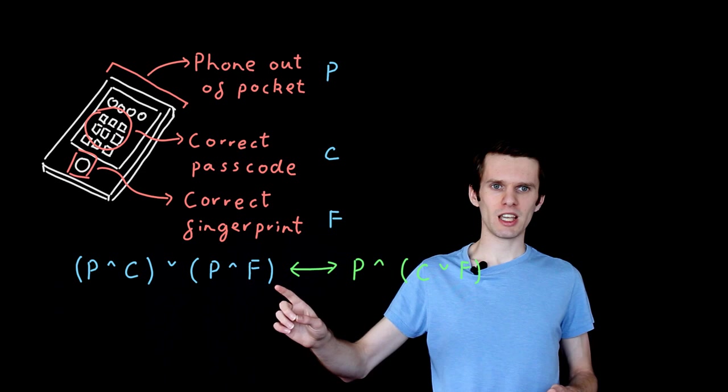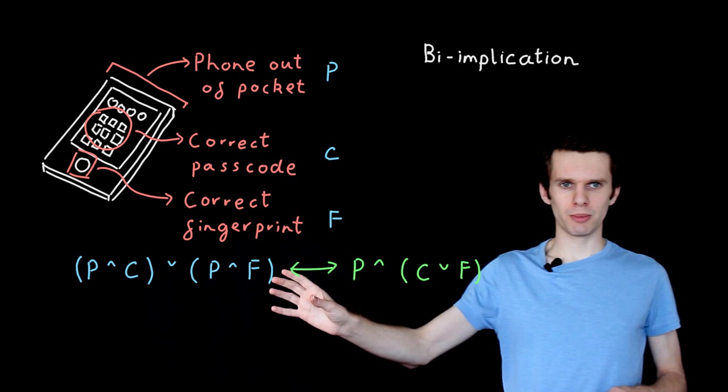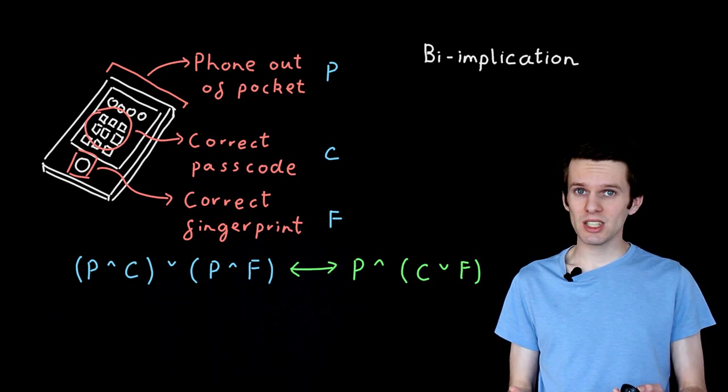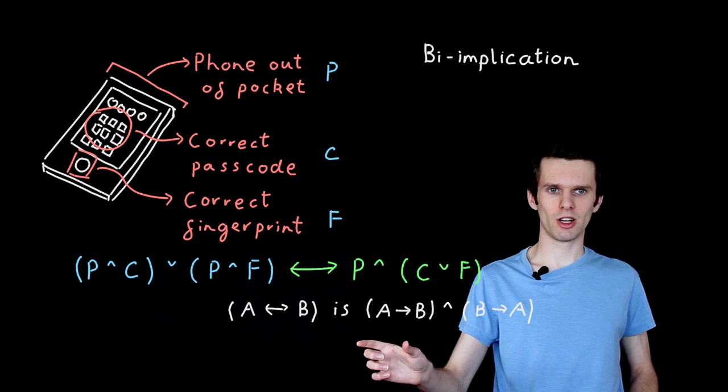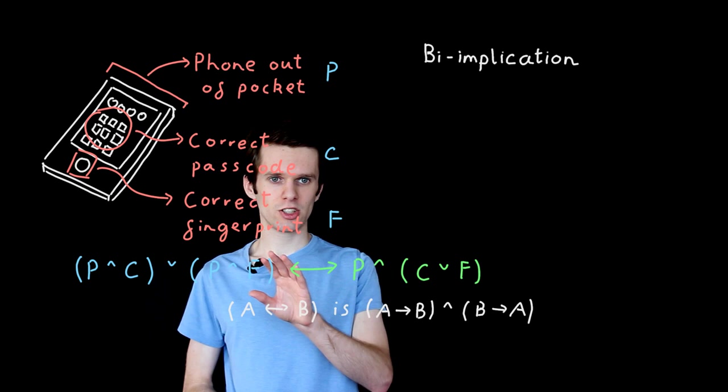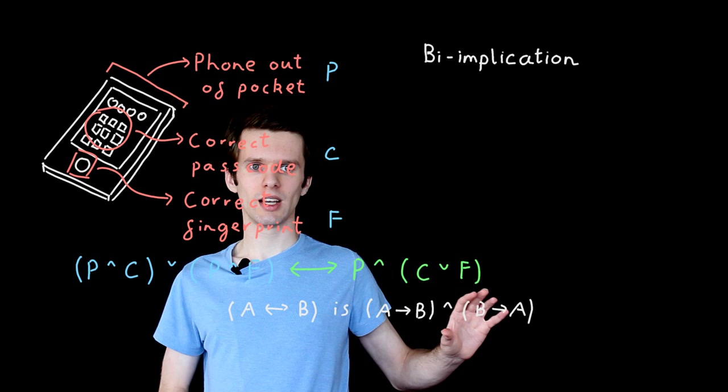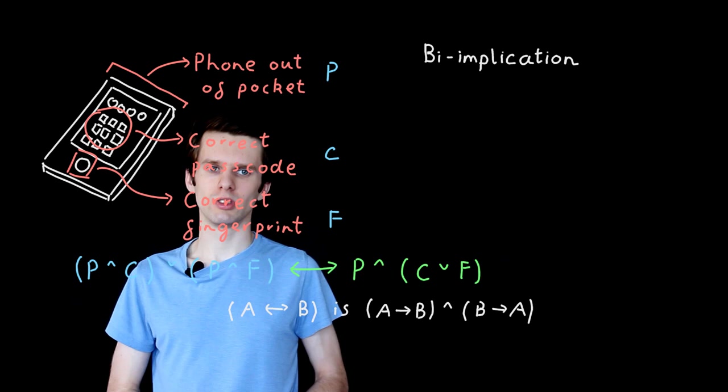We introduce a new symbol called bi-implication. In propositional logic, we saw our implication symbol, which is read if A then B. With bi-implication, we read this A if and only if B. And its meaning is actually really simple. If we have A if and only if B, all that's saying is that the forward direction of the implication holds, A implies B, but also the reverse direction holds, B implies A. In order to prove bi-implication, all we need to show is that this direction holds and the reverse direction holds. I'm only going to show the forward direction for speed, but the proof of the reverse direction is similar.